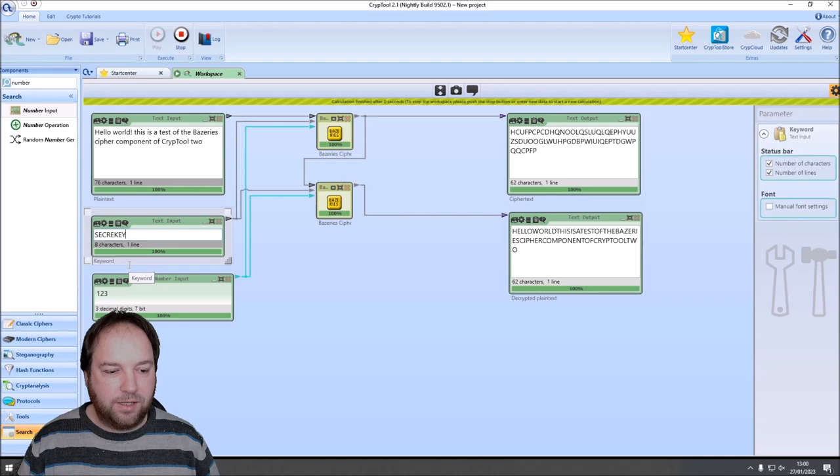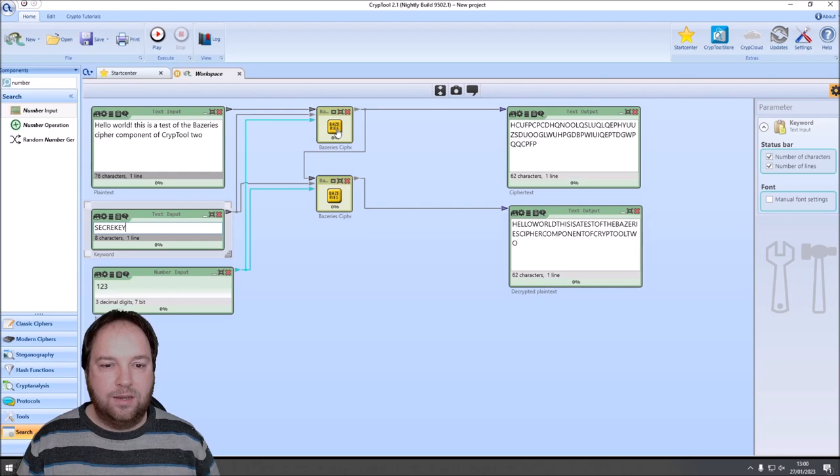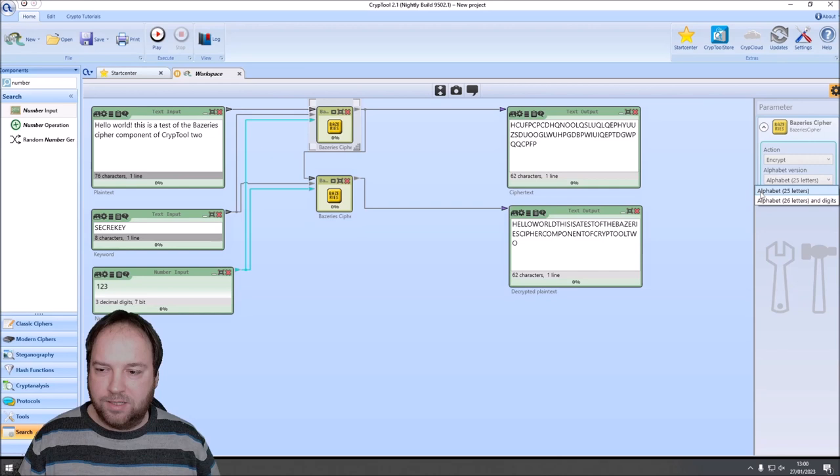First we have the alphabet with 25 letters here. That means we only have the Latin letters from A to Z. And remember I equals J. But we also have the possibility to use a 26 letters alphabet and digits. So we have a total of 36 symbols in our plain text and cipher text alphabet.